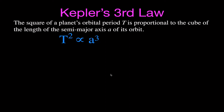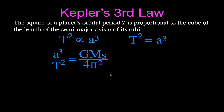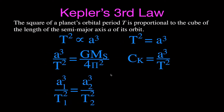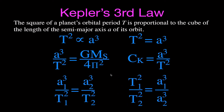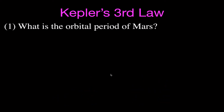We can rewrite that as T squared is proportional to A cubed. There are some other ways you will see Kepler's Third Law written, and we're going to use all of those equations in the six examples. Let's get started with example number one.